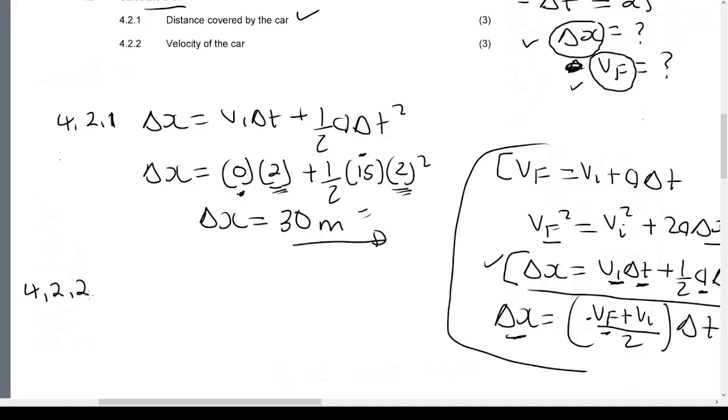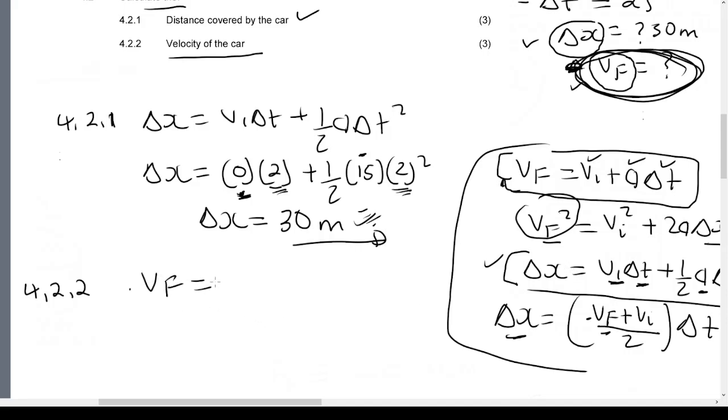Now we're doing 4.2.2. Calculate the velocity of the car. You have zero initially, then what is the final velocity? So we want final velocity. Can we use the first equation? Yes, because we know time is 2 seconds, acceleration is 15, and initial velocity is 0. We can use any equation now because we have everything, including delta x as 30 meters. Let me choose the simplest one.